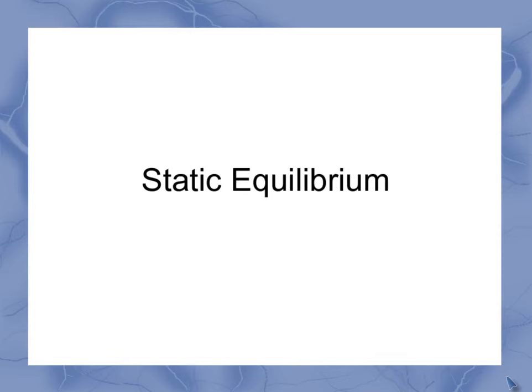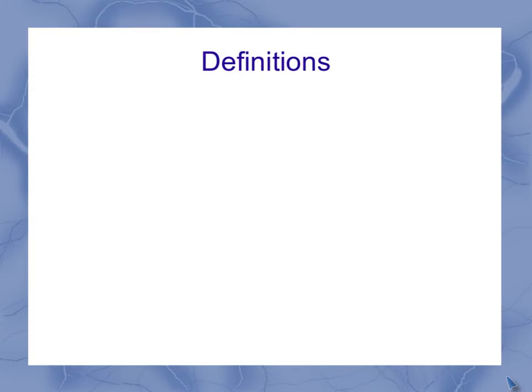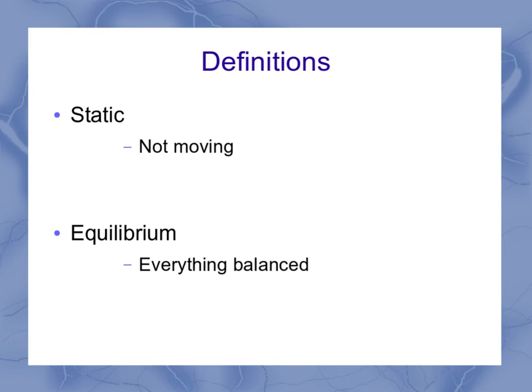So now we're going to look at the concept of static equilibrium. To do that, we're going to define a couple of words: static and equilibrium. Static means that it's not moving, and equilibrium means that everything's balanced. So I need a system that's not moving and everything is balanced.